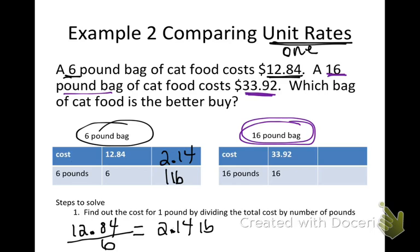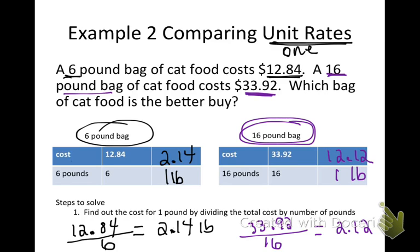Now do the same for the sixteen-pound bag: take the total cost and divide by sixteen pounds. That calculation gives two dollars and twelve cents per pound — so it's fairly close. Make sure to do this carefully. The sixteen-pound bag is the better buy.